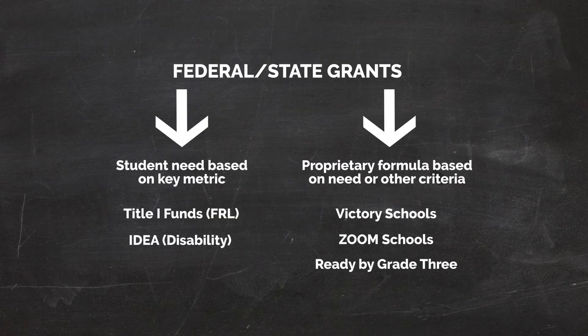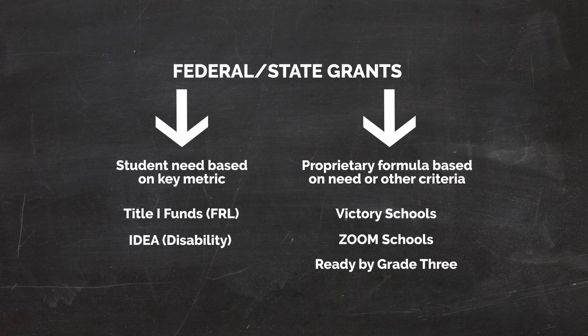For example, our Title I funds from the federal government are generally distributed to schools based off of the percentage of students that qualify for a free or reduced lunch. Our IDEA funds from the federal government are generally based off of the type of disability that the student has. When it comes to state grants, there are proprietary formulas for Victory Schools, for Zoom Schools, and for our Read by Three programs. Studies have shown that funding allocations to schools within a single school district may have a greater impact on students than funding across school districts. And this is why the concept of equitable distributions of funds is so important.